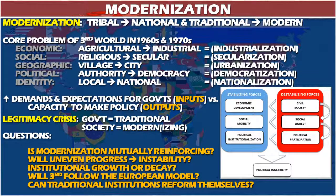On the stabilizing side, you get more economic development and growth. People are generally better off because society is no longer governed by traditional roles, and there can be more social mobility. You also have a growth of political institutions — government capacities and specializations, with people becoming expert rather than amateur. On the other side, there are destabilizing forces: a growth in civil society, or what Huntington called social mobilization, where people start forming associations and groups and putting pressure on the political system.